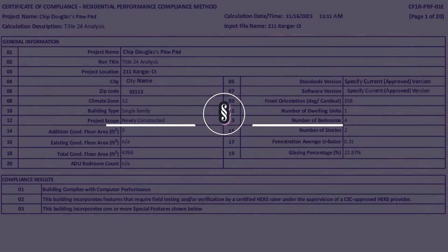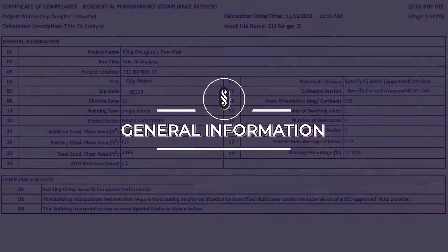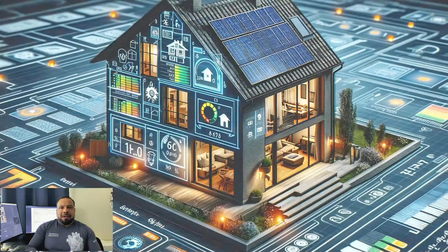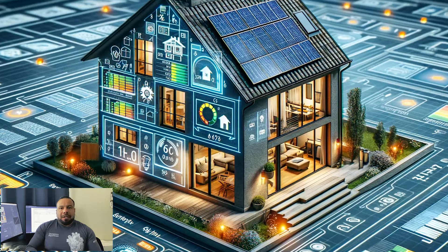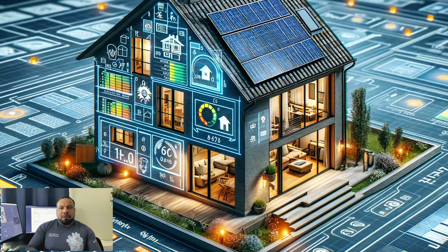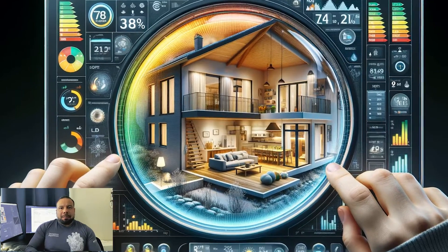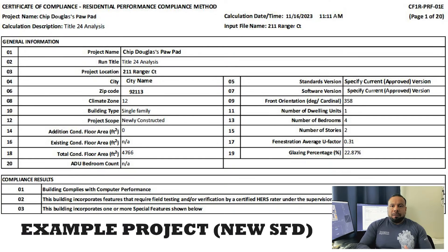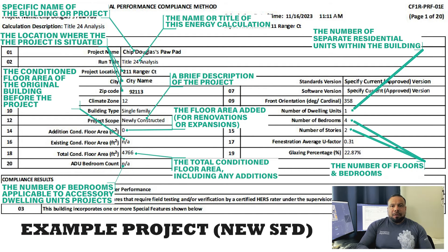I'll kick this off with the General Information Table. The General Information Table serves as the foundation for your energy compliance document. It provides a snapshot of your building's important characteristics, as recorded by the person that prepared your energy documents. I will focus on the elements that have the most impact on the energy analysis, and for the rest I will provide descriptor tags.